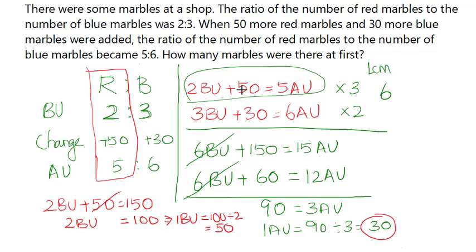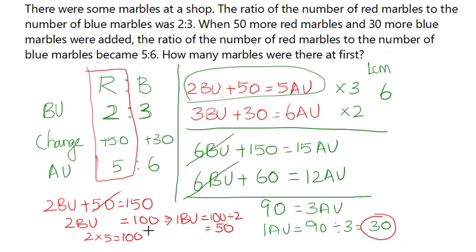At first there were 2 before units of red marbles, so the number of red marbles is 2 times 50 which equals 100. For blue marbles there were 3 before units, so the number of blue marbles is 3 times 50 which equals 150.